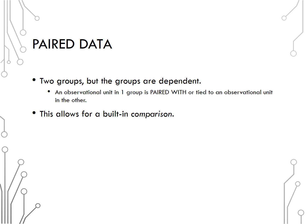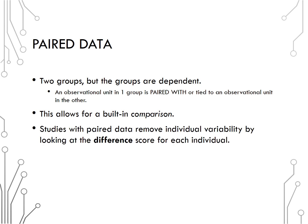This allows for a built-in comparison within each pair. That built-in comparison allows us to remove the individual variability by looking at the difference in score for each individual. So for each pair, we will find the difference between the two, and then analyze those differences. This is a key feature of paired data, that we're taking the difference between the two values for each pair.